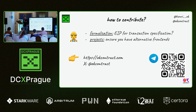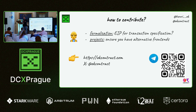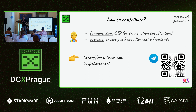If you want to contribute, we could work on an EIP to specify the transaction part, and we're really looking for other contributors. If you're a project and want to ensure you have alternative frontends, we'll pretty soon release everything publicly — but you can contact us to join the private beta before public launch. You can find us on Twitter as OKContract, and we just created a Telegram group where we'll probably announce things.